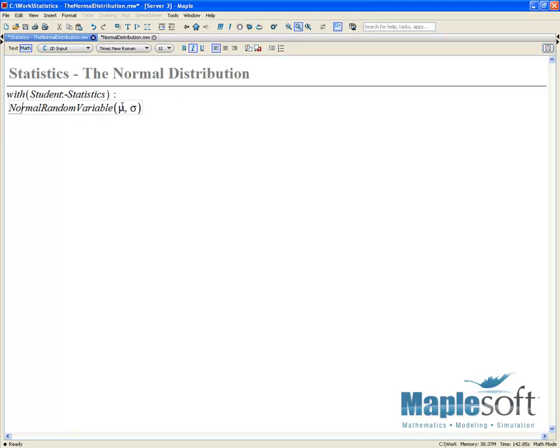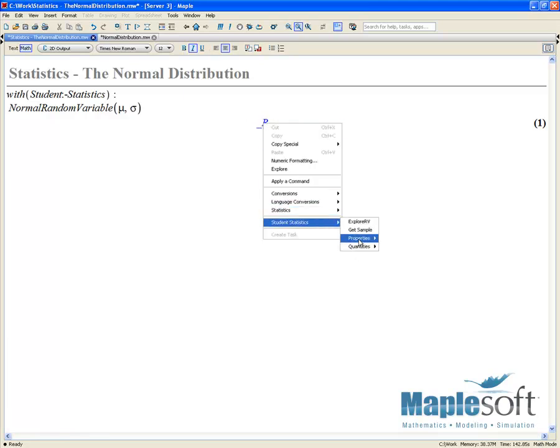We can give this with symbolic parameters mu for the mean as well as sigma for the standard deviation. Now if we right-click on this, we can do things like generate the probability density function.